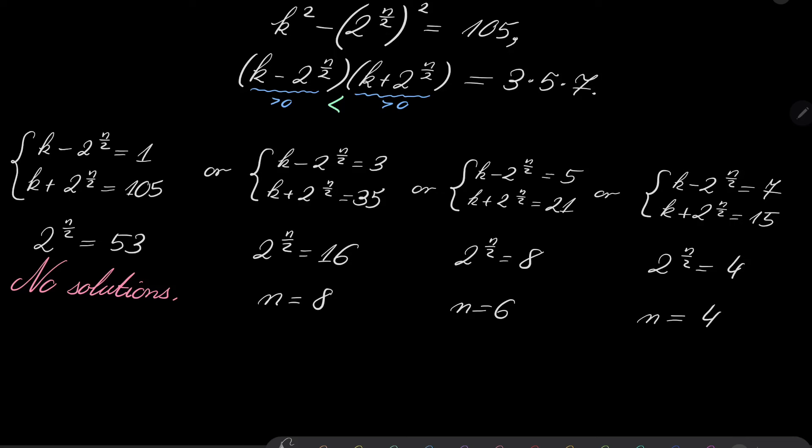And, in every case, we can find k as well. So, in the first case, if n equals 8, then k equals 3 plus 16, it's 19. In the second case, if n equals 6, so we have 8. So, k equals 13. And, in the last case, if n equals 4, then we have 11, I believe. If I'm not mistaken, let me check that. 7 plus 4 is 11, yes. Everything is all right, I believe.